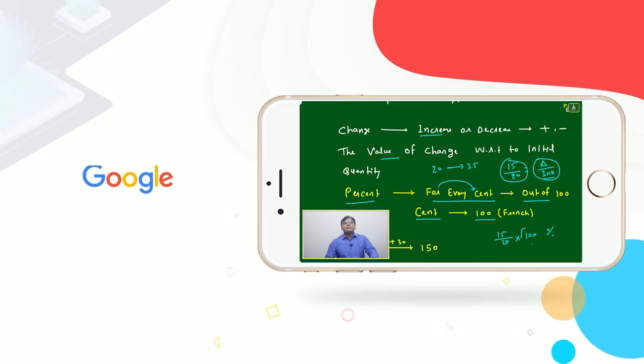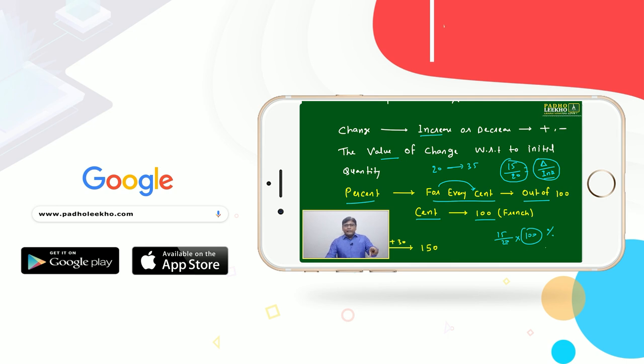Then we have to put this sign. Once you are multiplying with 100, you are calculating any change with respect to initial value for every cent. Then we put this sign, and it will be called a percentage.